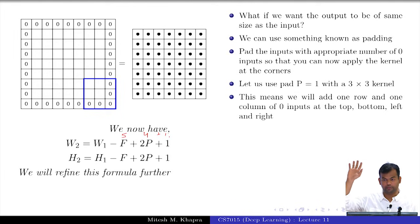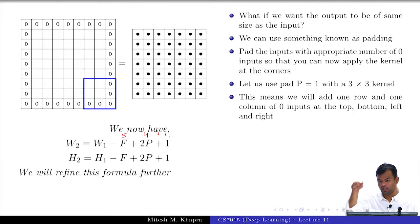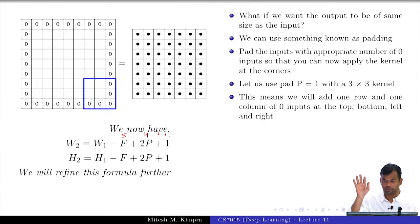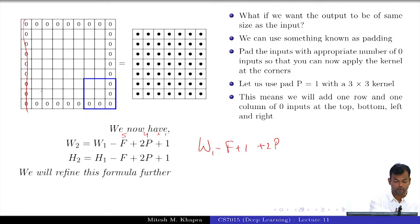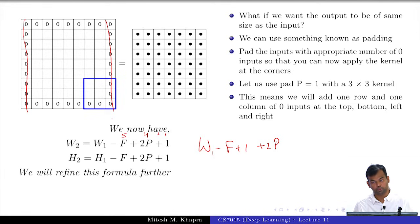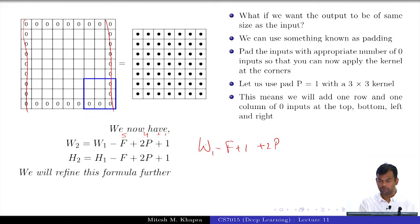In the 3 cross 3 case there is 1 column on the left and right which is problematic, so a padding of 1 adds 1 column to the left, right, top, and bottom - exactly the problematic region. In the 5 cross 5 case, 2 columns are problematic, so I use a padding of 2 on all sides. If you substitute in the formula: w1 minus 5 plus 1 plus 4 gives you back w1. That is how padding restores the original dimensions.